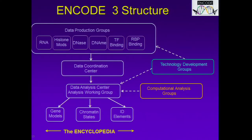This slide outlines the structure of ENCODE 3. There are seven data production groups. They deposit their data into the Data Coordination Center, which performs quality assessments, houses the data, and makes it available to the research community. The data is taken up by the Data Analysis Center, which supports the activities of the analysis working groups—this is where the computational analysis groups are involved. The output are gene models, chromatin states, and candidate functional elements, which in total represent the encyclopedia.